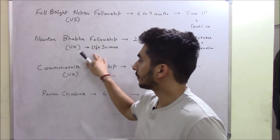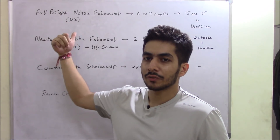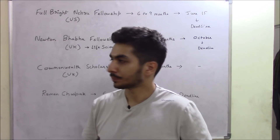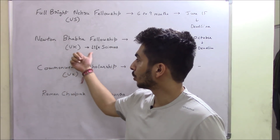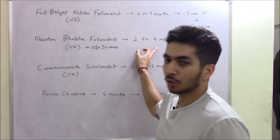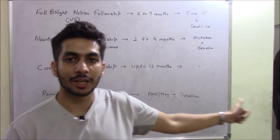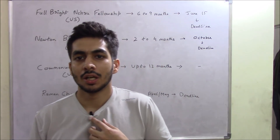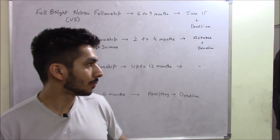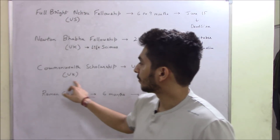The next fellowship is the Newton-Baba Fellowship, which is for life sciences students only — it is not open to all categories. The Fulbright-Nehru Fellowship is open to all PhD students whether arts, science, or commerce, but the Newton-Baba Fellowship is only for life sciences students and is conducted in the UK for a period of two to four months. The deadline for this is October 2018, so registered PhD candidates in life sciences can still apply.